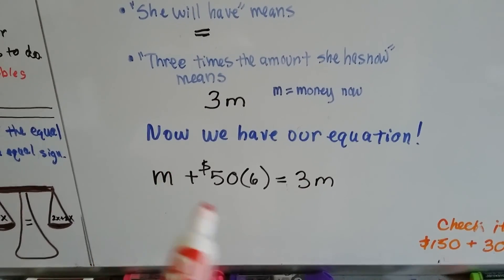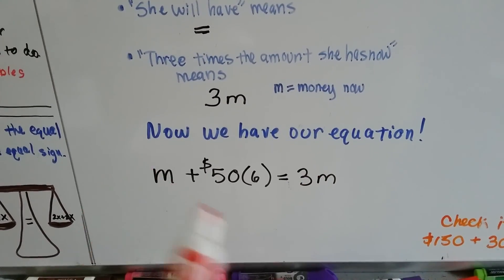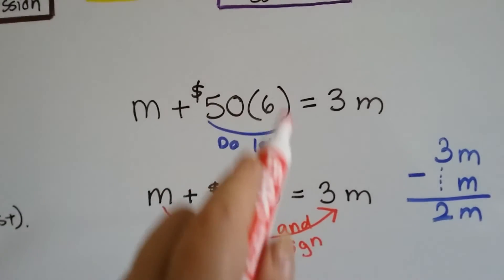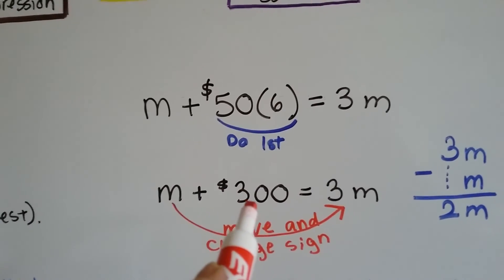Now we have variables on each side of the equal sign, don't we? So let's get to work. The first thing we're going to do is multiply the $50 times the 6. I'm going to get that out of the way. We can see that it's $300.